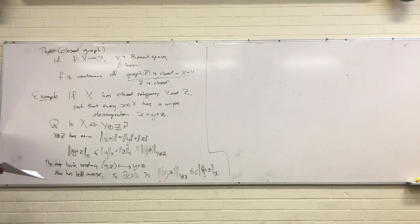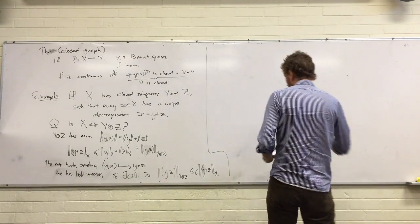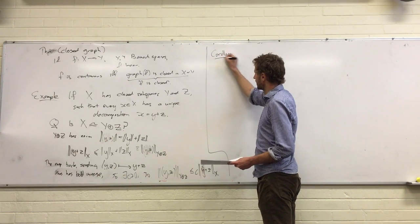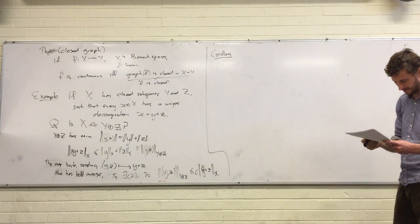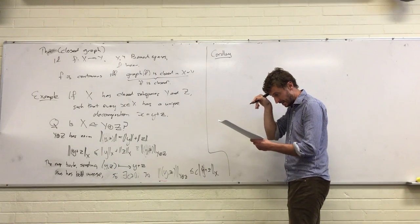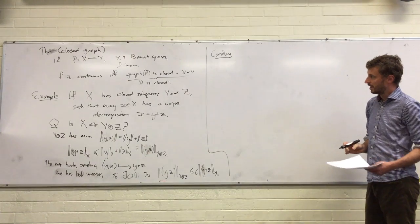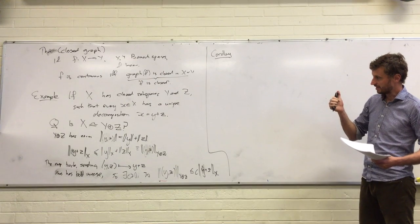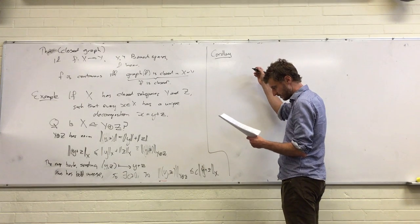So another corollary — which we're not actually going to use, as far as I remember, in the remainder of the notes, but nevertheless — it's sort of considered one of the big three things about Banach spaces: the Uniform Boundedness Principle, the Closed Graph theorem, and the Open Mapping theorem. It's a bit evil to tell you two and not the others.